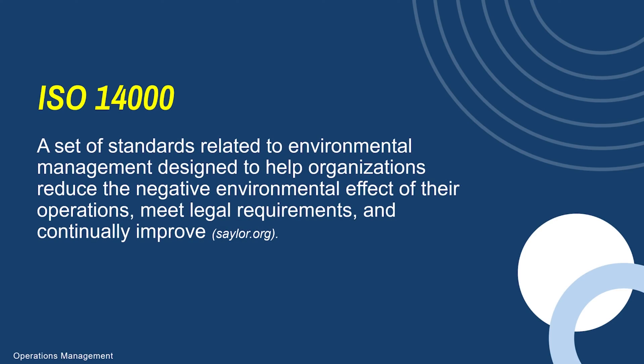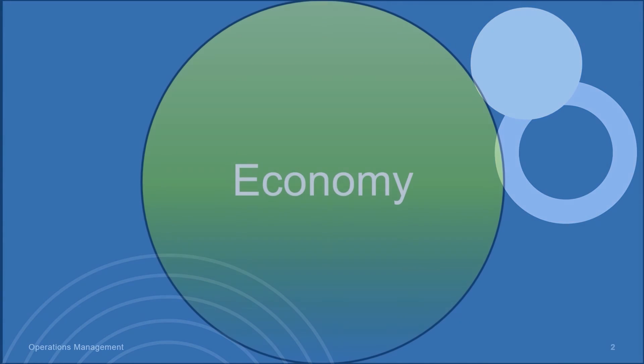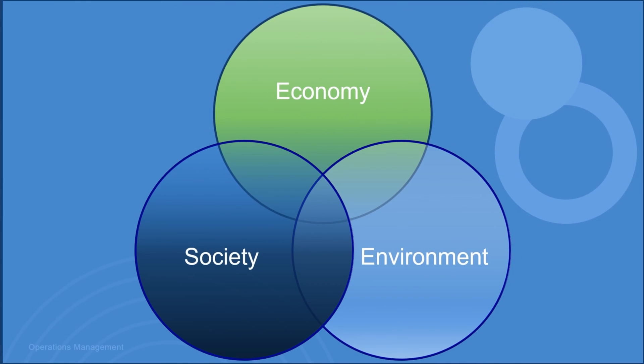There are two sets of standards I want to discuss. ISO 14000 is a set of standards related to environmental management, designed to help organizations reduce the negative environmental effect of their operations, meet legal requirements, and continuously improve. As I discussed in an earlier video about sustainability and balancing profitability with protecting the economy and society — ISO 14000 really addresses that aspect of quality.